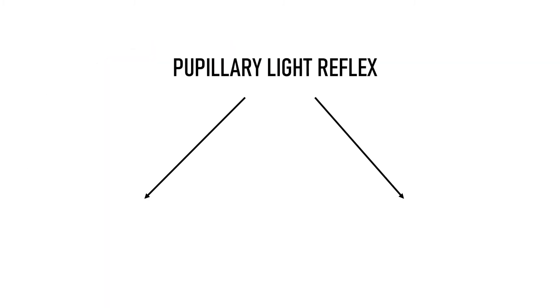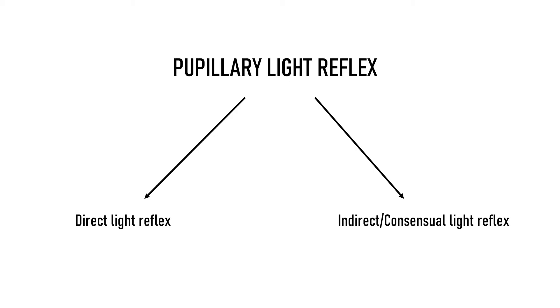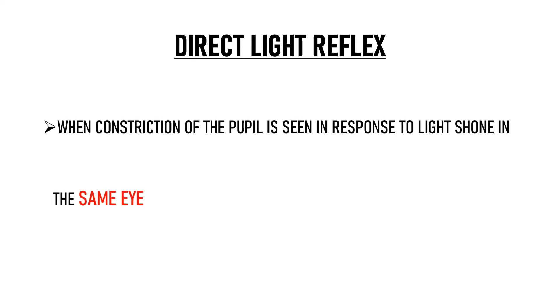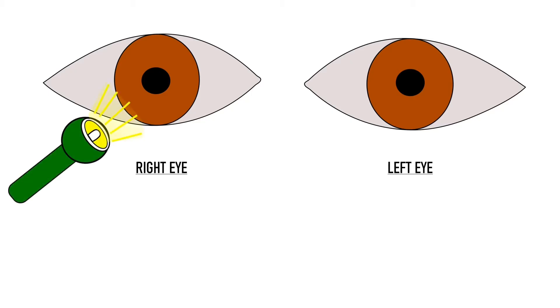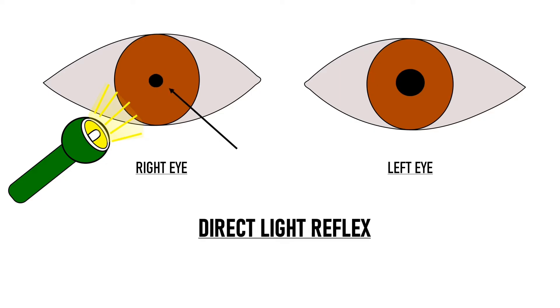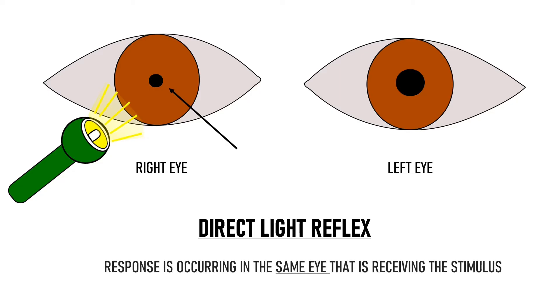Pupillary light reflex can be a direct light reflex or an indirect light reflex, which is also known as consensual light reflex. Direct light reflex is when constriction of the pupil is seen in response to light shown in the same eye, i.e. the ipsilateral eye. For example, if this is the right eye of the patient and we shine light on it and in response we see the pupil of the right eye constricting, it is known as direct light reflex because the response is occurring in the same eye receiving the stimulus.